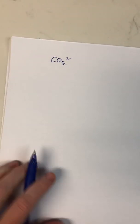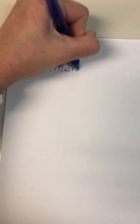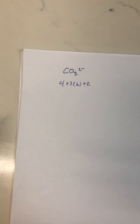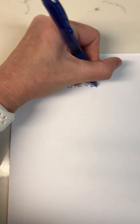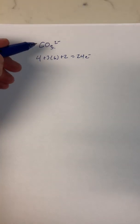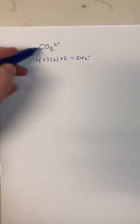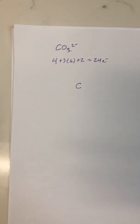So let's take a look at carbonate ion, which is CO3²⁻. Carbonate has 4 plus 3 times 6 plus 2 electrons — in other words, it's got 24 total electrons that are going to be available in the structure.